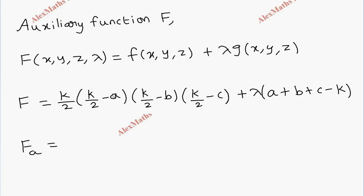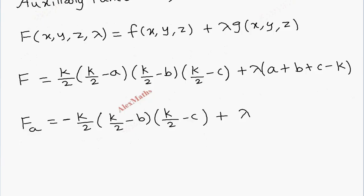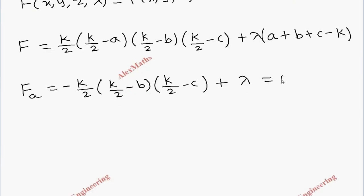Differentiating F with respect to A: since K/2 minus B and K/2 minus C are constants, the differentiation of (K/2 minus A) gives minus 1, so we get minus (K/2)(K/2 minus B)(K/2 minus C) plus lambda equals zero. The remaining terms in the constraint differentiate to zero.